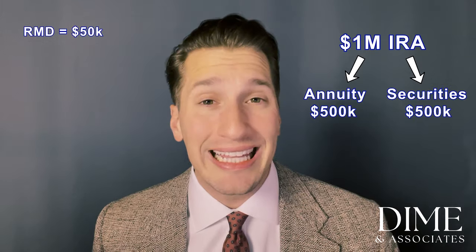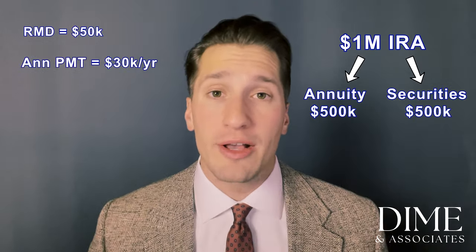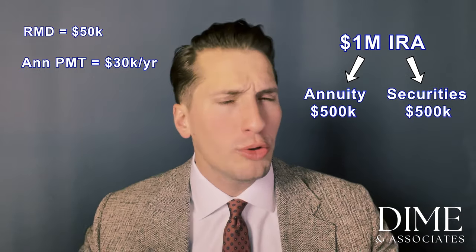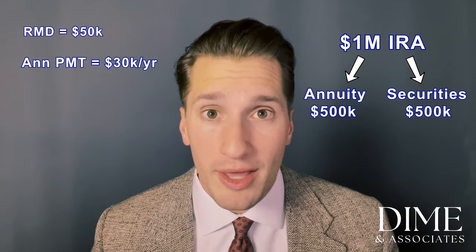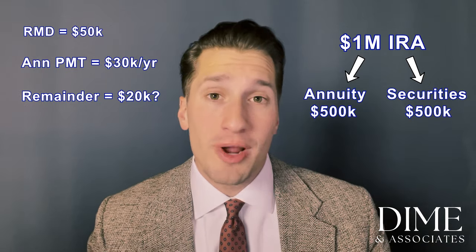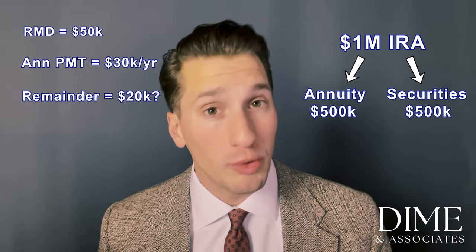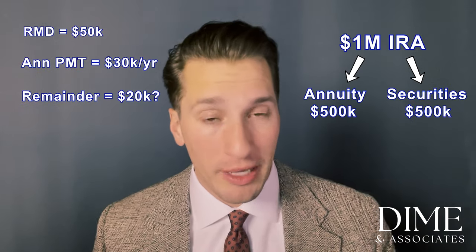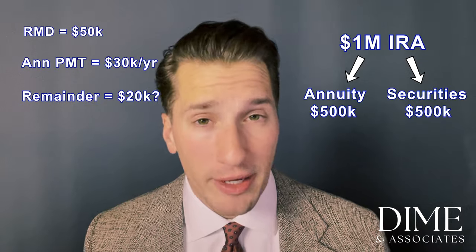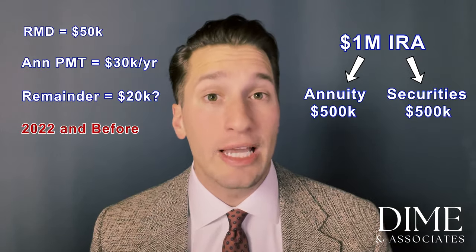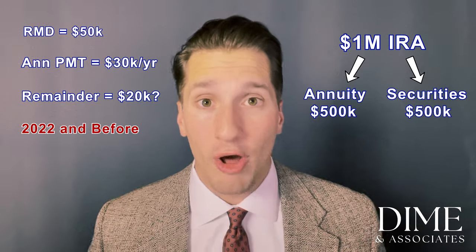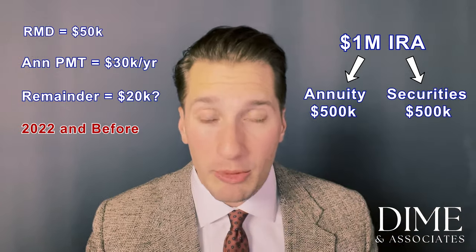For the sake of this example, let's say the annuity is making annual payments to you of $30,000. Your total required minimum distribution is $50,000. So intuitively, you might think that since the annuity is paying $30,000, you just need to make sure $20,000 comes out of the non-annuity portion of your IRA. Well, before the Secure Act 2.0, which passed at the end of 2022, that intuition would have landed you with a hefty RMD missed tax penalty of 25%. Before the Secure Act passed, the penalty was actually 50% on missed RMDs. That's because before 2022, the annuity payment only satisfied that annuity's own required minimum distribution — and you still had to do the math on the remaining $500,000.